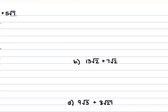For part B, we have 13 square root of 2 plus 7 square root of 2. The square roots of 2 are the same, so this is 13 plus 7 with the square root of 2. 13 plus 7 is 20; keep the square root of 2. That's 20 square root of 2.